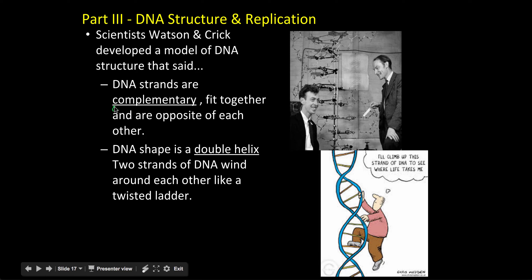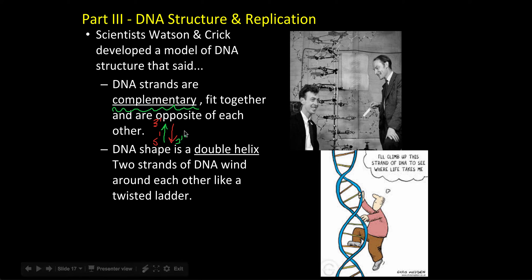They said that the strands are complementary, which is important — it means they fit together and they're opposite of each other. So one is going to run in this direction and the other strand is going to run down in the other direction. We'll refer to these as five prime and three prime, and those run opposite. So they're anti-parallel and complementary, which means they fit together.